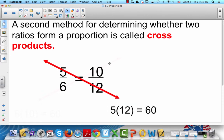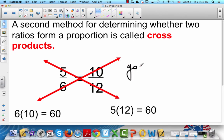And then you're going to multiply 6 times 10. 6 times 10 gives you 60. So since 60 equals 60, that means yes, this is a proportion because that came out to be equal. So this is a proportion.